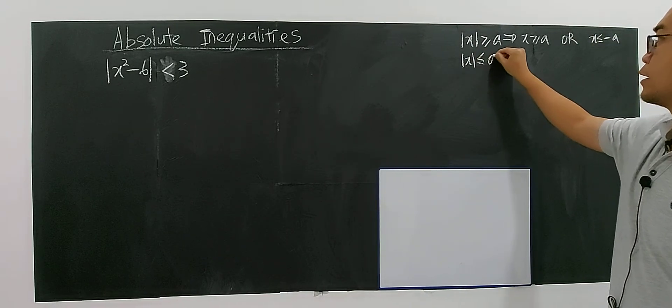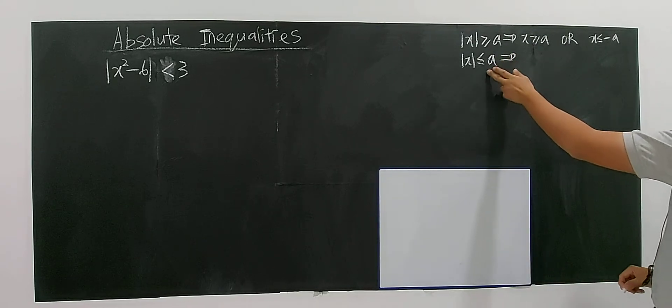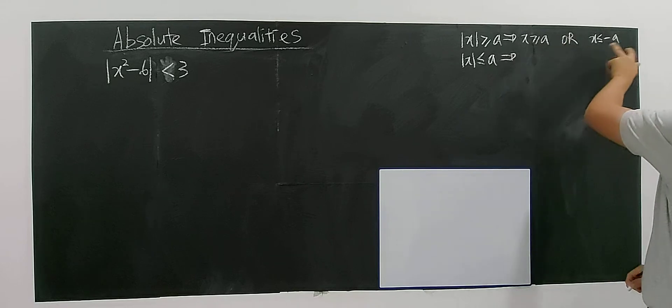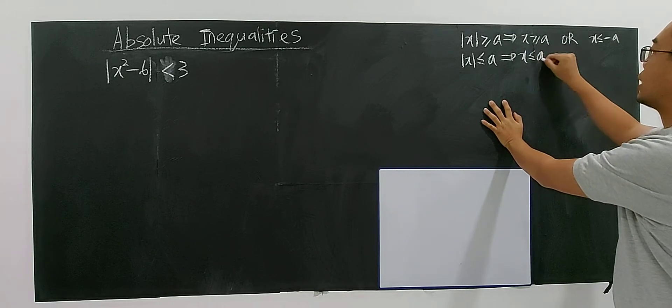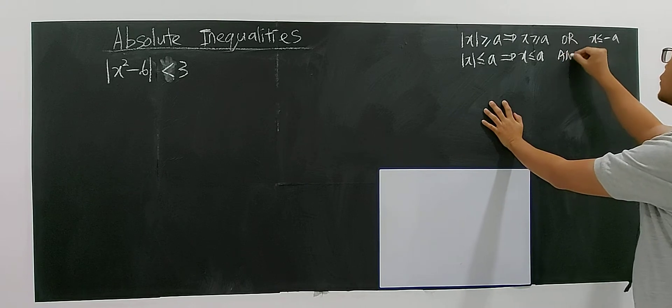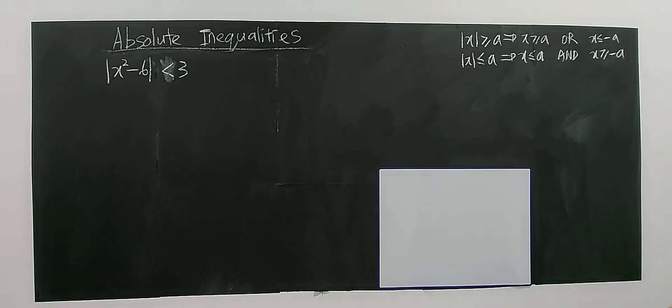If you have less than a, in the previous video I already tell you that if you have less than a, less or equal a, everything reverse. Very easy to memorize. You will have less or equal a, or will become and, and this will become greater or equal negative a.